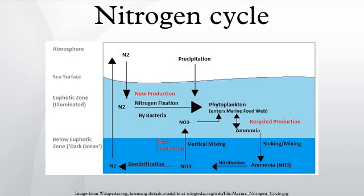The nitrogen cycle is an important process in the ocean as well. While the overall cycle is similar, there are different players and modes of transfer for nitrogen in the ocean. Nitrogen enters the water through precipitation, runoff, or as N2 from the atmosphere. Nitrogen cannot be utilized by phytoplankton as N2, so it must undergo nitrogen fixation, which is performed predominantly by cyanobacteria. Without supplies of fixed nitrogen entering the marine cycle, the fixed nitrogen would be used up in about 2,000 years.